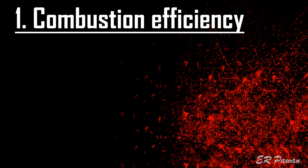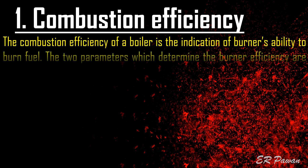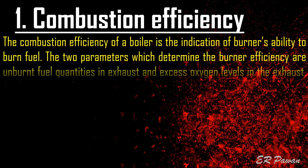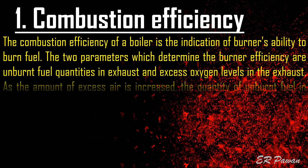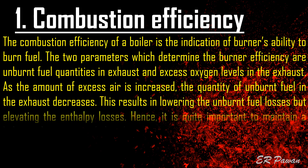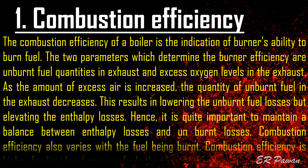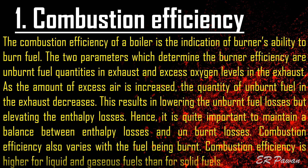Combustion efficiency of a boiler is the indication of the burner's ability to burn fuel. The two parameters which determine burner efficiency are unburned fuel quantities in the exhaust and excess oxygen levels in the exhaust. As the amount of excess air is increased, the quantity of unburned fuel in the exhaust decreases, lowering unburned fuel losses but elevating enthalpy losses. Hence, it is quite important to maintain a balance between enthalpy losses and unburned losses. Combustion efficiency is higher for liquid and gaseous fuels than for solid fuels.